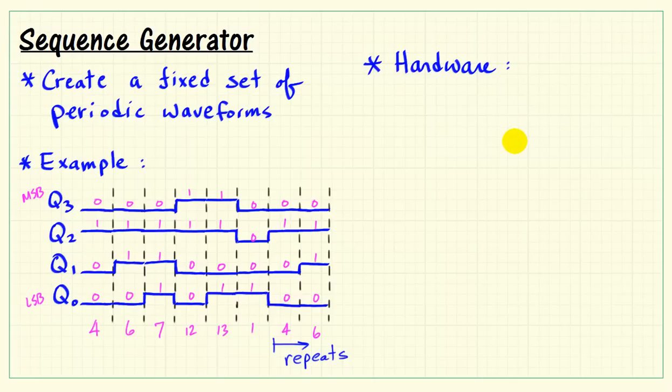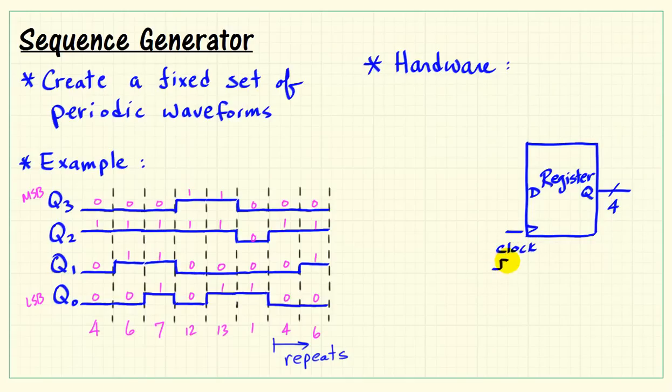Now the hardware that is typically presented for a circuit like this is based on two parts. The first part would be a register. That would be 4 flip-flops. We could use 4 D-type flip-flops for this purpose. We'll connect the clock to our system clock.